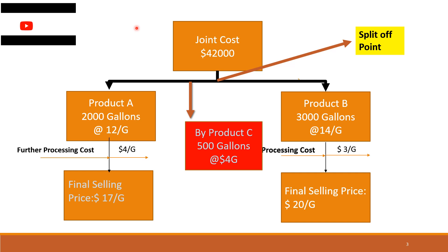Here we have the joint cost for product A, product B, and byproduct C. As I mentioned before, if byproduct C is inventorable, we will deduct the value of byproduct C from the joint cost. But if it is very immaterial and not inventoried, then this value will not be deducted from the joint cost. In this particular example, we have not inventoried byproduct C.